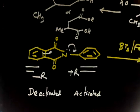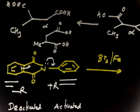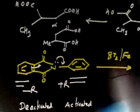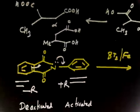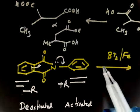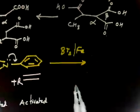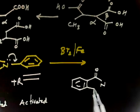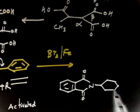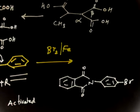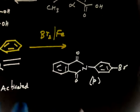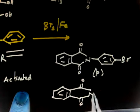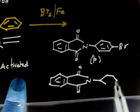You have one ring that is deactivated and one ring that is activated. So bromine will go in the activated ring at ortho and para positions, giving two products. The major product will be para because on the ortho side there is some steric hindrance. If the question says write the major product, write only the para isomer. If the question does not specify, write both ortho and para products.